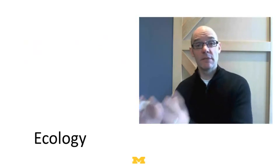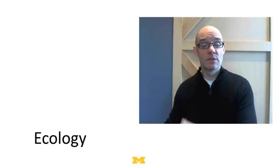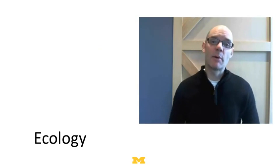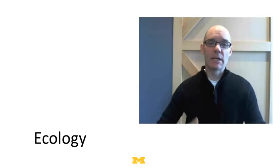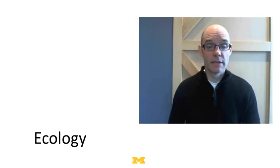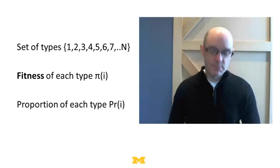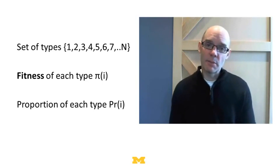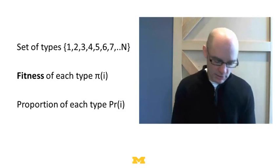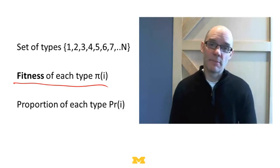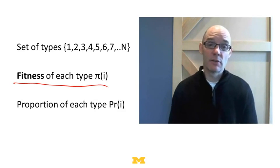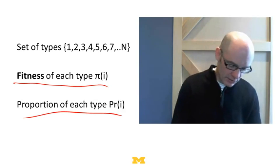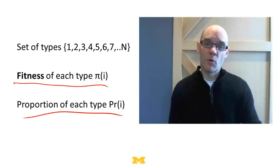We're thinking about different phenotypes of a species, and those phenotypes having different fitnesses, and thinking about replicator dynamics as a way to capture the dynamics of that population. In replicator dynamics there's a set of types, but now instead of assuming a payoff to each type, I'm going to assume there's a fitness to each type — how fit that member of the species is to its particular ecological niche. And I'm also going to assume there's some proportion of each type.